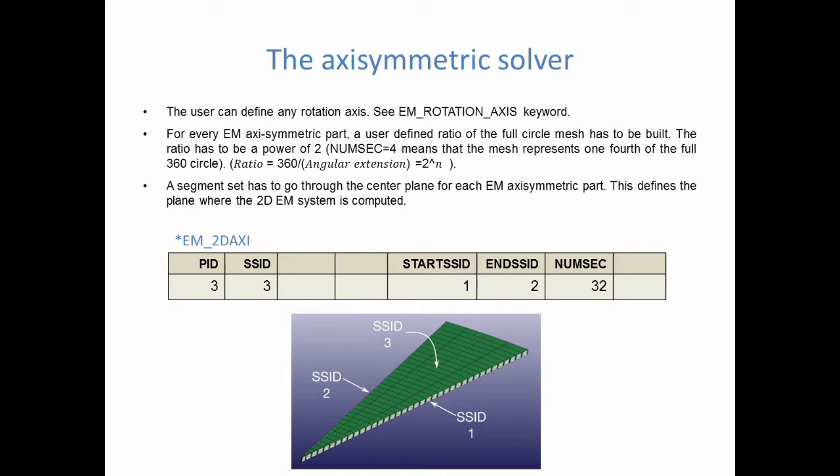Then, the user needs to define a segment at the center of that slice, which will be where the EM fields will be computed, and he needs to define a start segment set, and an end segment set, so the solver knows where to report the fields. He then puts all this information in the EM_2D_AXIS keyword. Each slice will need to be associated with such a keyword.